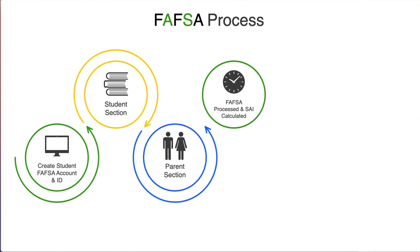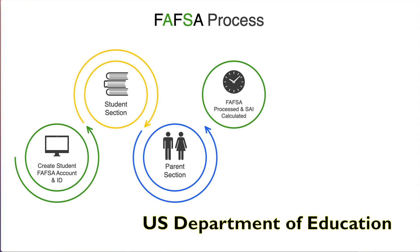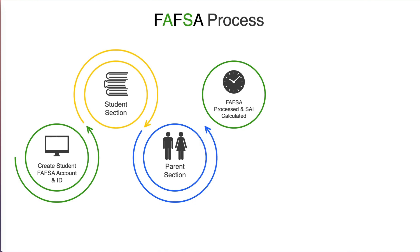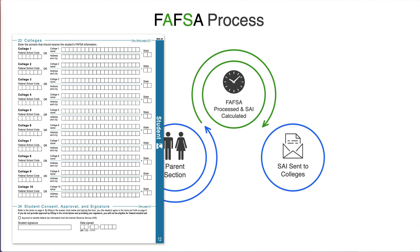FAFSA will be processed by the U.S. Department of Education and calculate SAI, Student Aid Index, which estimates the student's eligibility for federal student aid. The SAI is sent to the colleges that the student selected in their FAFSA application.